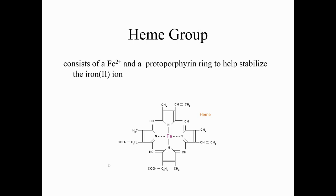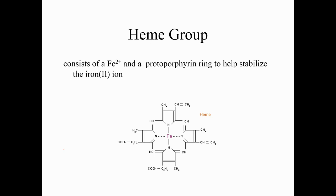Both proteins share a heme group consisting of a protoporphyrin ring with an iron 2+ at its center. This involves Lewis acid-base chemistry: the iron 2+ is an electron acceptor, and the nitrogens in the ring have lone pairs, making them electron donors. The iron 2+ is a Lewis acid, and the nitrogen is the Lewis base. Together they form a complex.